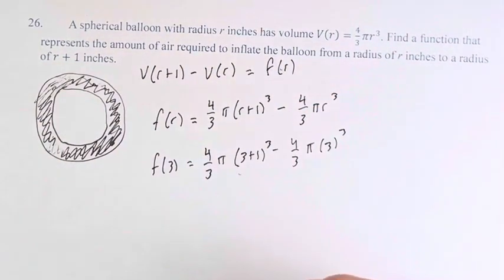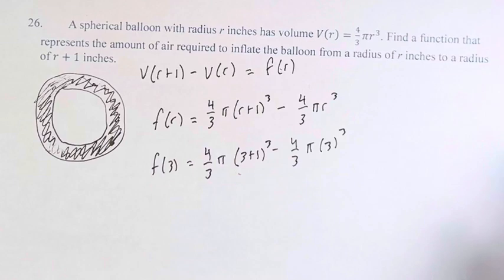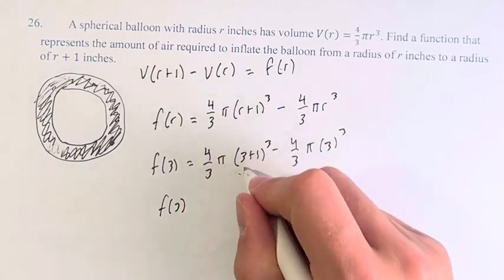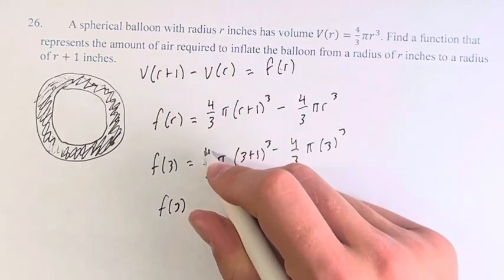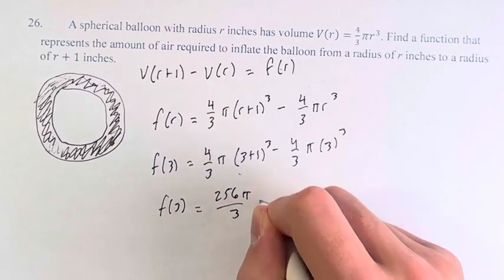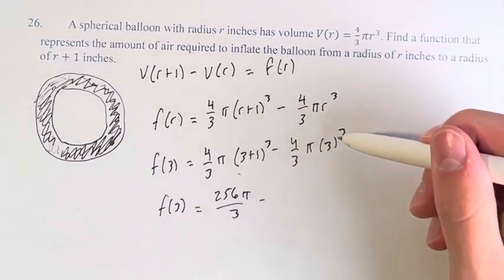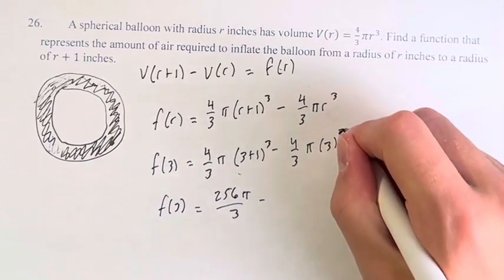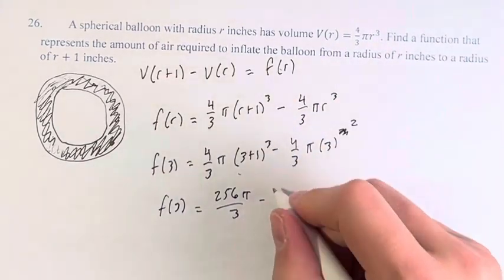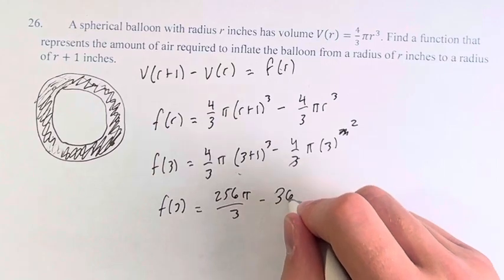Doing this, I think, is a lot simpler than doing five separate terms, because you can just do 3 plus 1 is 4 cubed is 64. 64 times 4 is 256, so 256π/3 minus 3 cubed divided by 3 is 3 squared. 4 times 3 times 3 is 36, so this cancels to 36π.